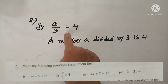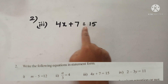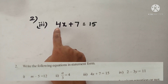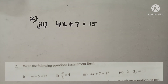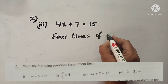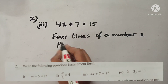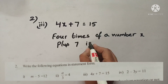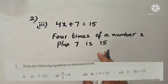See the third question: 4x plus 7 is equal to 15. So 4 is multiplied to a number x and 7 is added to it and we are getting 15 as the answer. The mathematical statement is: 4 times of a number x plus 7 is 15.